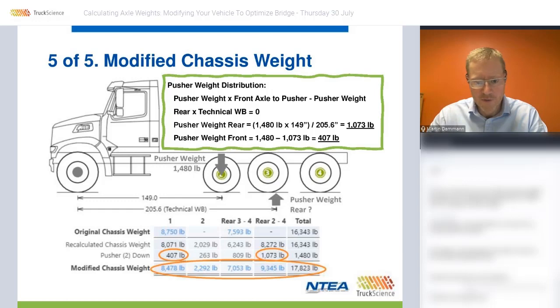That gives us the front, rear, and total modified chassis weight — with the rear weight split into the pusher and the driven axles.